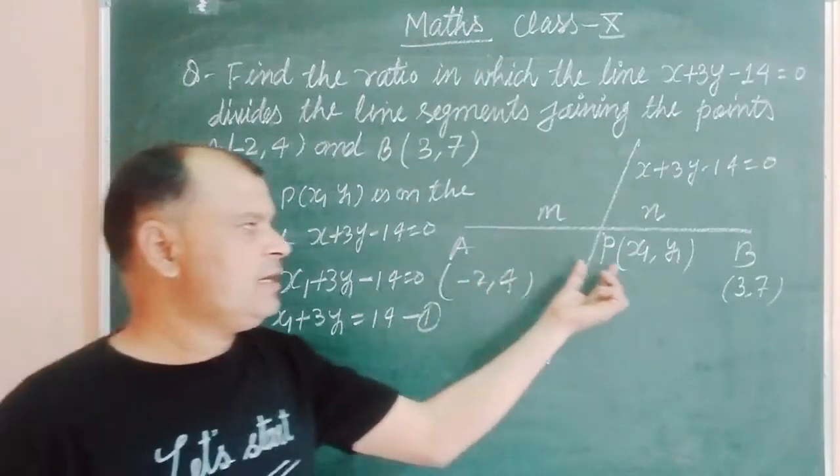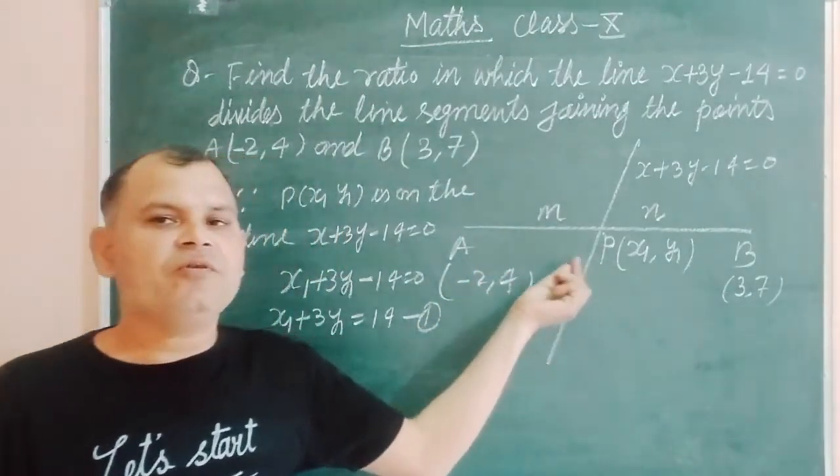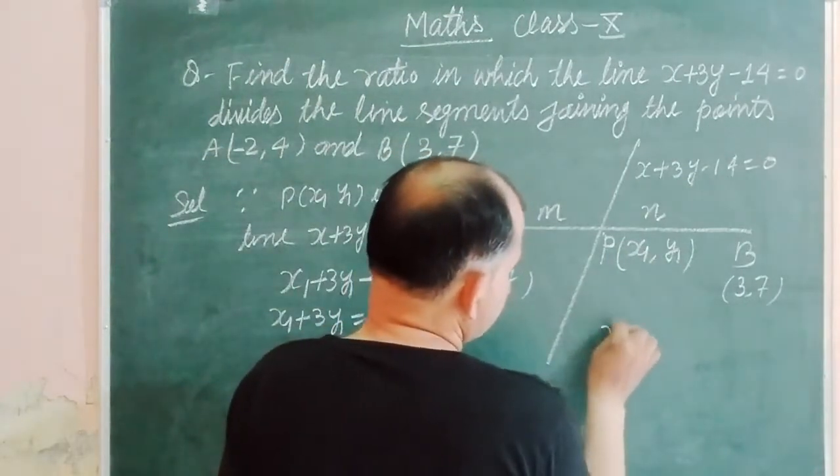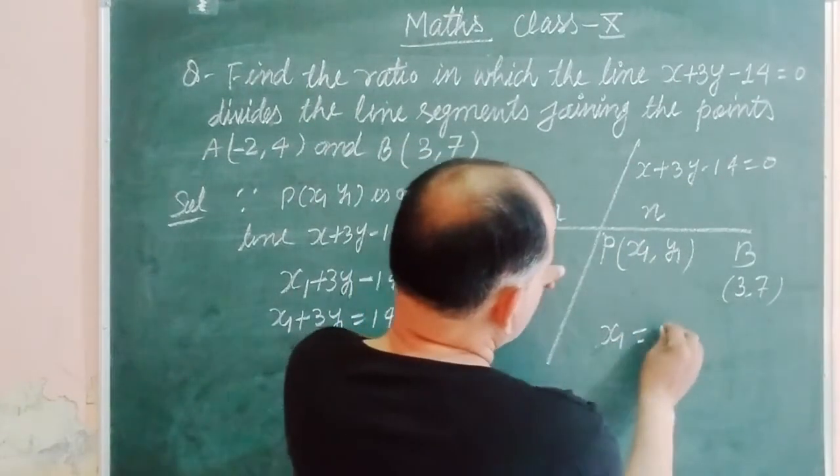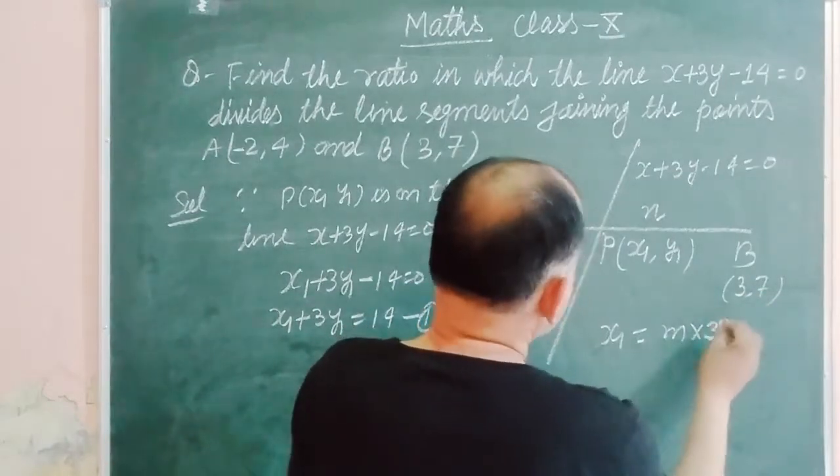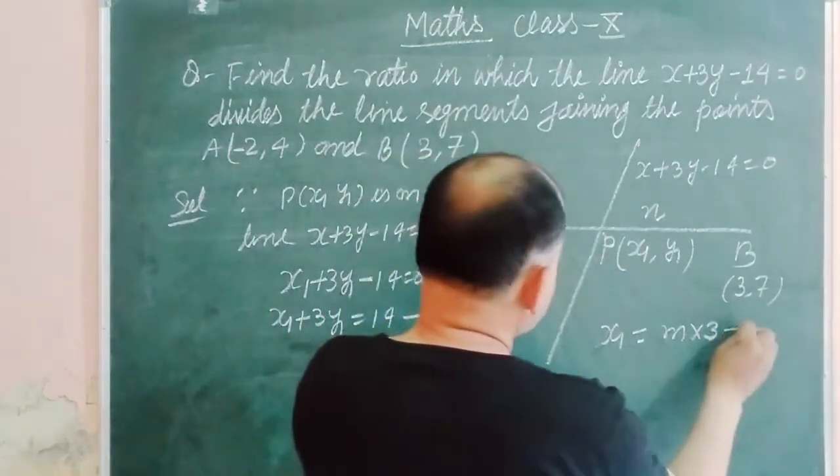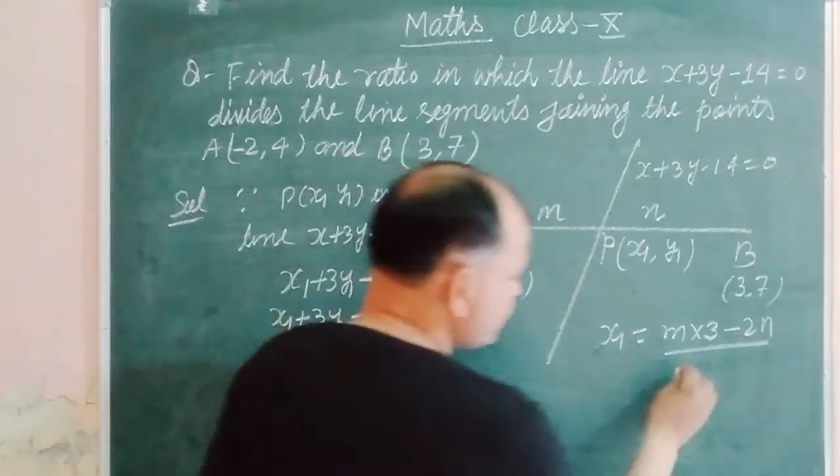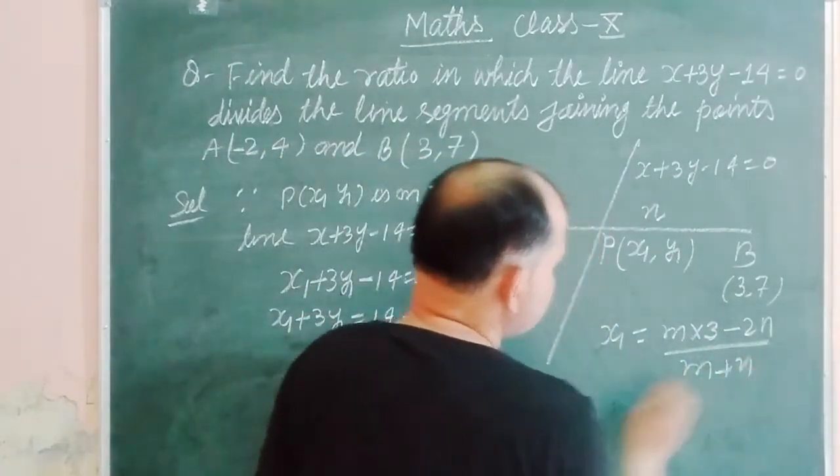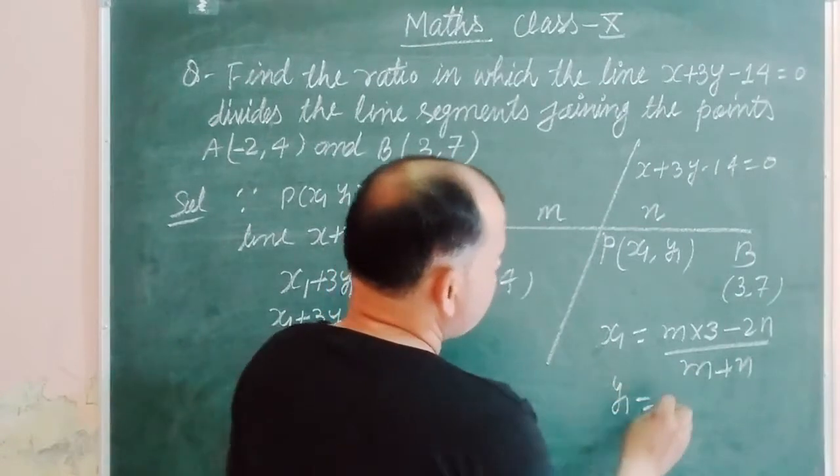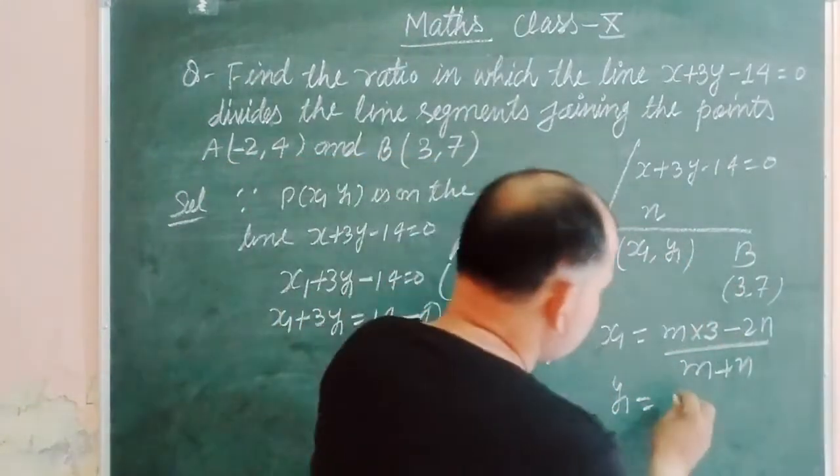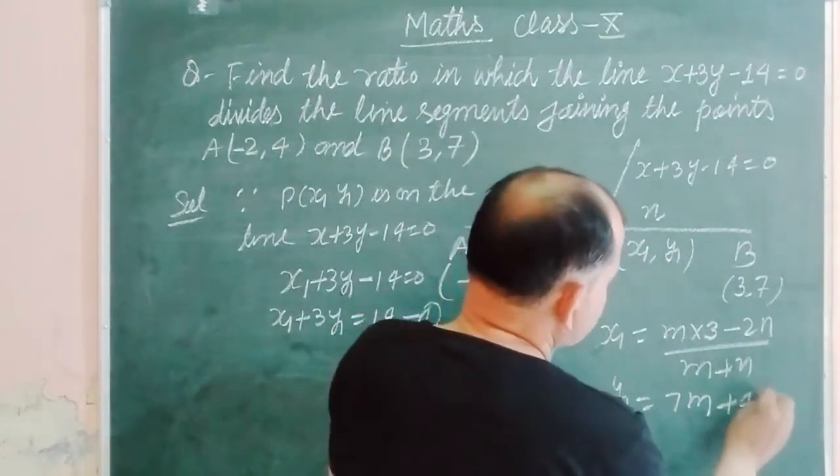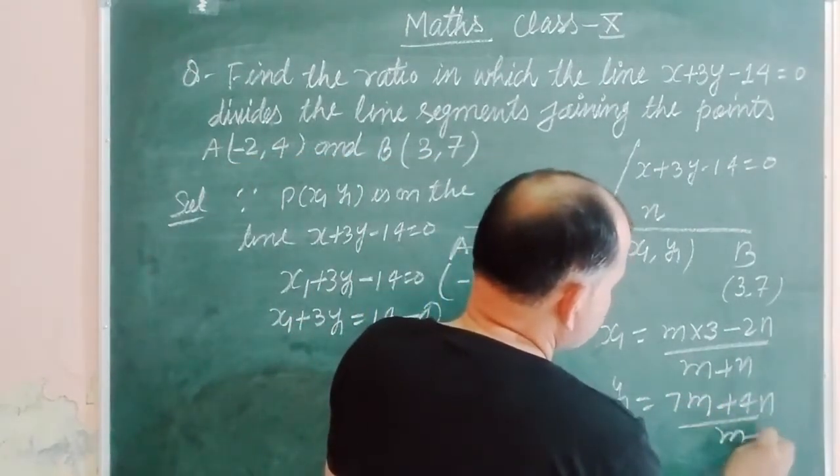Now we take the internal division formula. x1 is how much? m times x2, so x2 is 3, and n times x1, so this is -2n, over m plus n. And y1 is m times y2, which is 7m, plus n times 4, over m plus n.